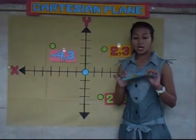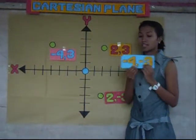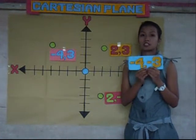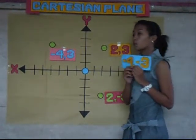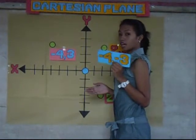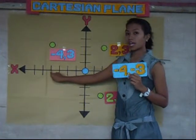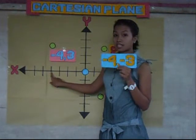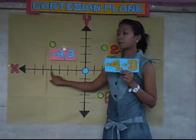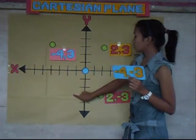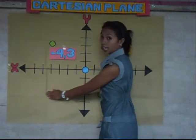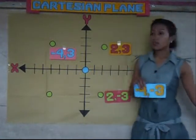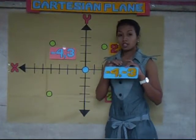Lastly, we have the ordered pair (−4, −3) — both negative — which is located in the third quadrant. Since x is negative 4, count 4 from the origin going to the left — 1, 2, 3, 4. Since y is negative 3, count 3 going down — 1, 2, 3. This is the location of our fourth ordered pair, which we name (−4, −3).